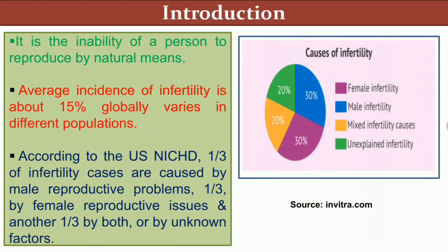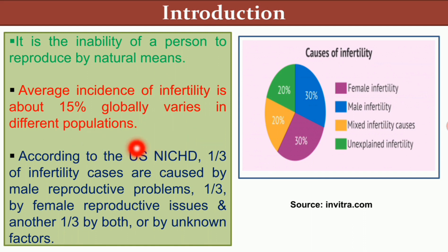First, what is infertility, or specifically male infertility? It is the inability of a person to reproduce by natural means — when a person is naturally unable to reproduce or give birth to offspring. The average incidence of infertility is about 15% globally, and according to the US NICHD, one third of infertility cases are caused by male reproductive problems, one third by female reproductive issues.